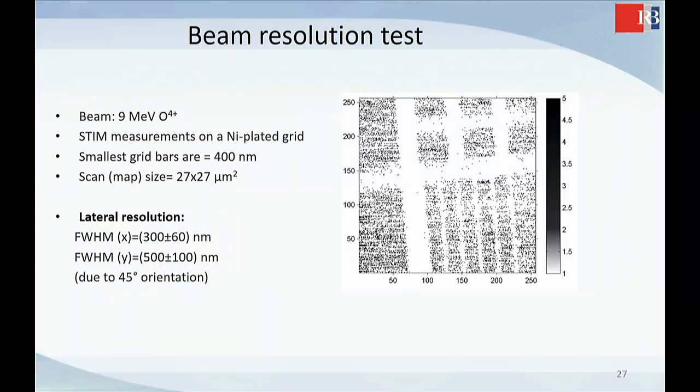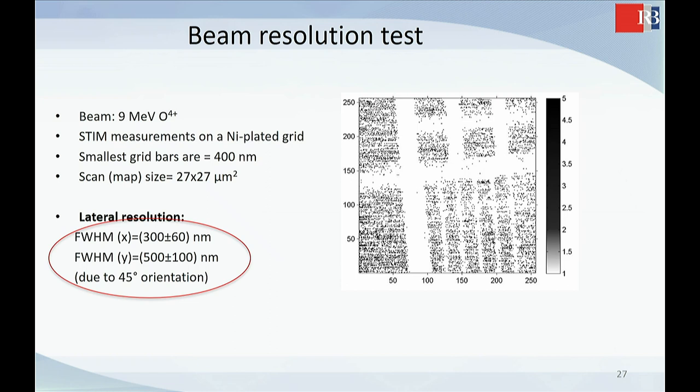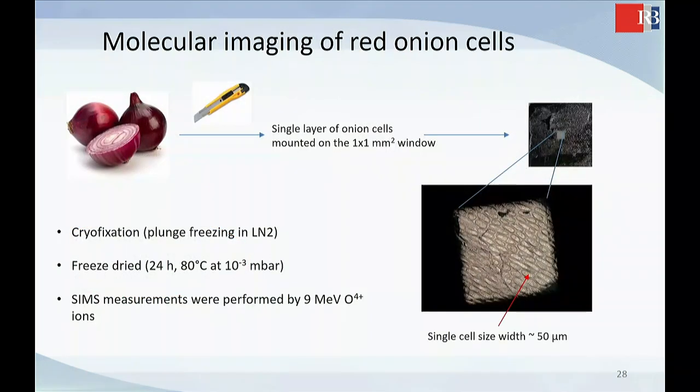In this way, we obtain much better spatial resolution. It was below one micron. So this 0.3 microns was probably the best. I think nobody repeated that good resolution with MeV SIMS. So you can really come to the point where you can analyze very small sample.